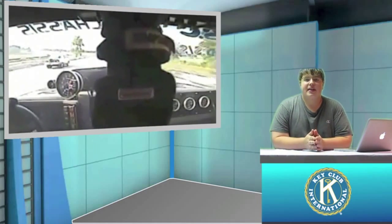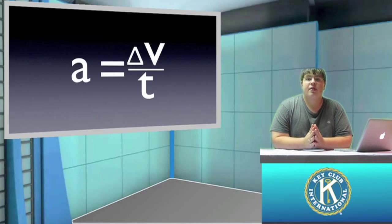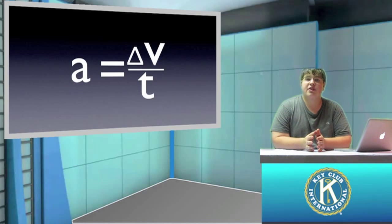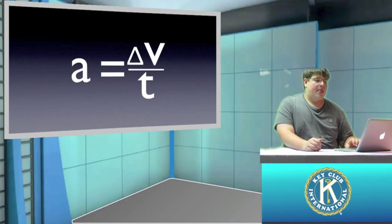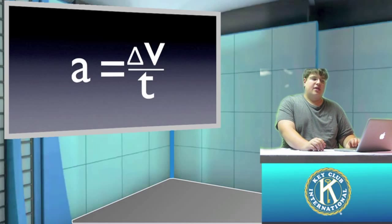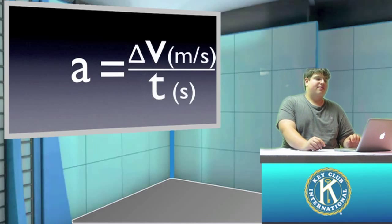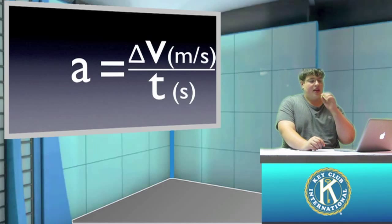So let's look at the general formula to find acceleration. The general formula is: acceleration is equal to the change in velocity of an object over time. So let's talk about the units for acceleration. The change in velocity is found by taking the final velocity minus the initial velocity.